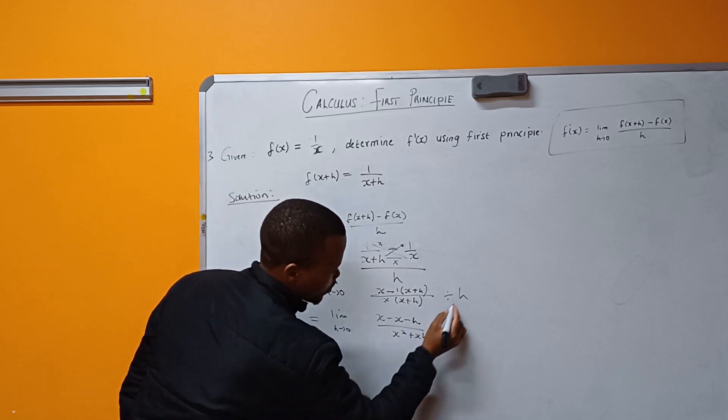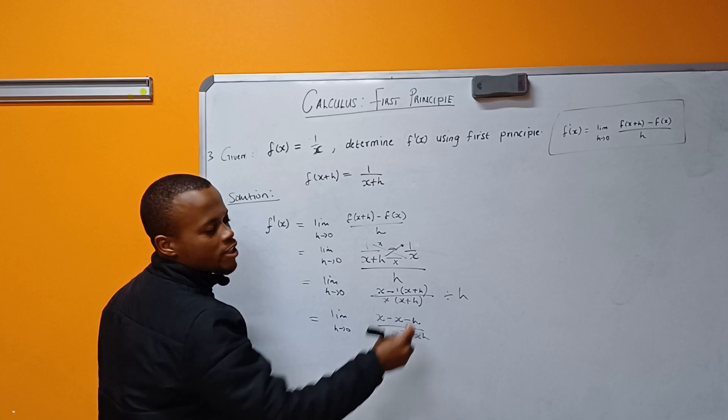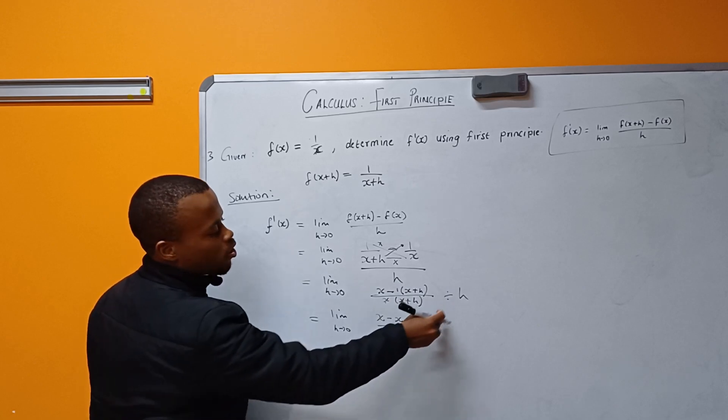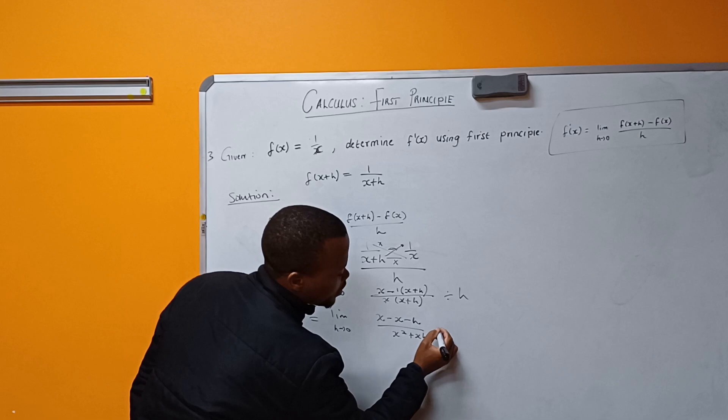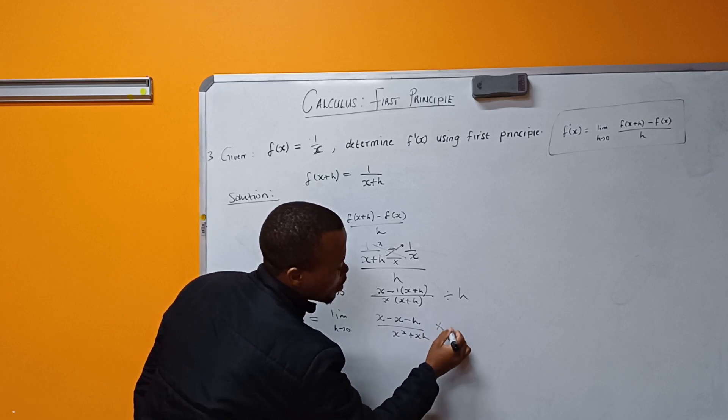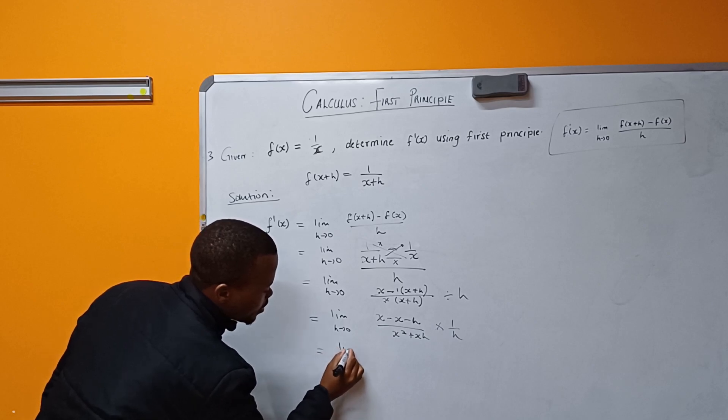Don't forget about this h. You can divide by h and convert division into multiplication. That means h will now be 1/h. So limit as h approaches zero...